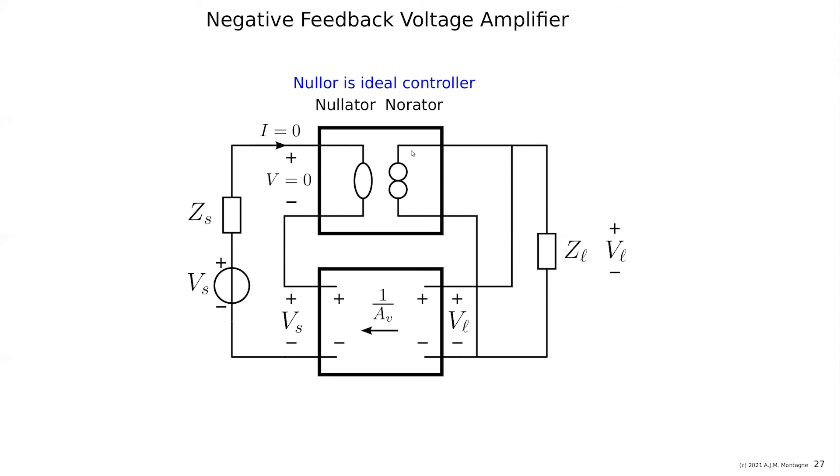Then the norator provides current, that's what the thing does, to satisfy this condition. So the norator provides current so that the voltage across VL will increase, increase, increase until it reaches VL. Then this will be the copy of VS and then the condition will be satisfied, the output will be zero. That is how it works.